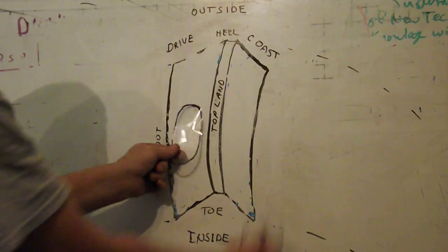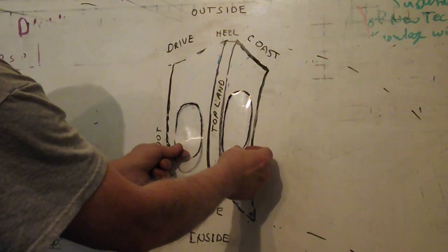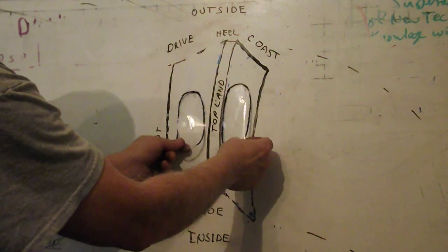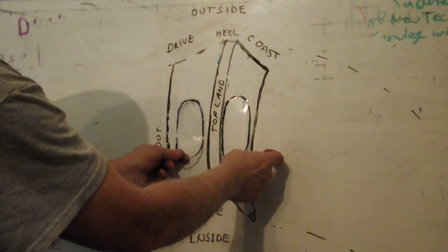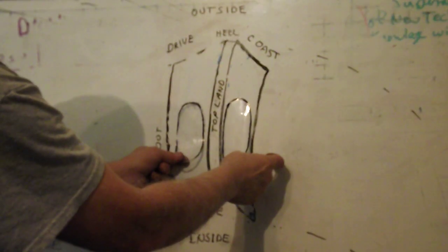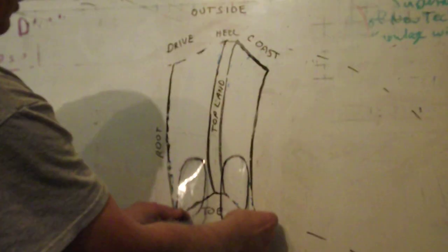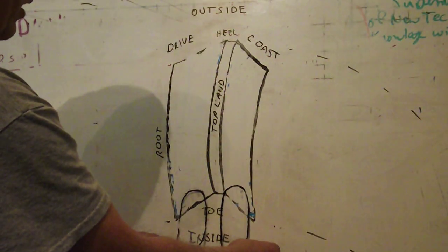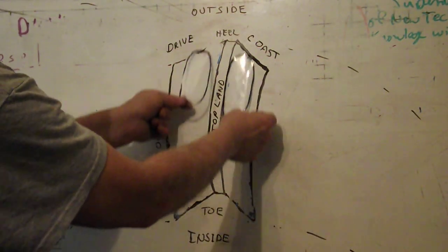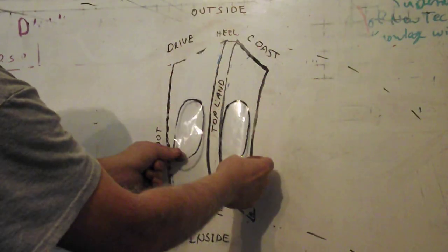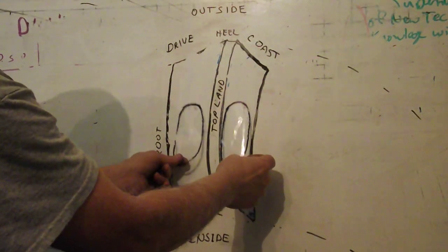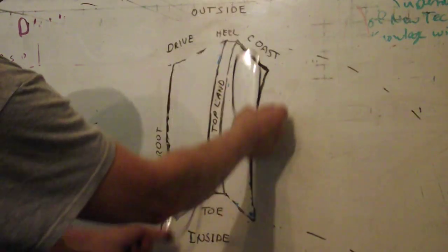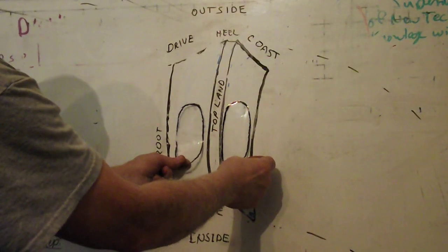Now what does backlash do? Once you've got your pinion depth correct and you're in the middle, you have to play with backlash. Backlash simply moves the patterns - if it's too tight, it moves the patterns together to the inside. If it's too loose, the patterns move to the outside. Keep your backlash where it belongs and adjust your pinion till your patterns are right.